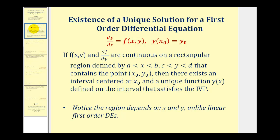If we have a first-order differential equation in standard form, with this initial condition, if f(x, y) and the partial derivative of f with respect to y are both continuous on a rectangular region defined by a < x < b and c < y < d, that contains the point x₀, y₀ given by the initial condition,